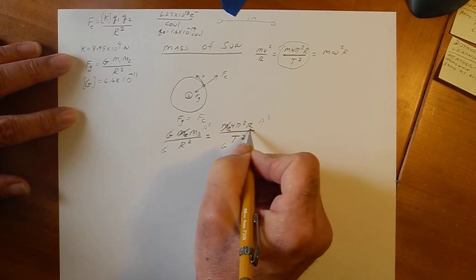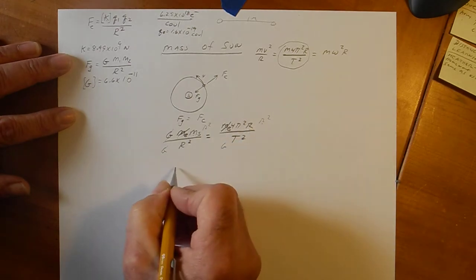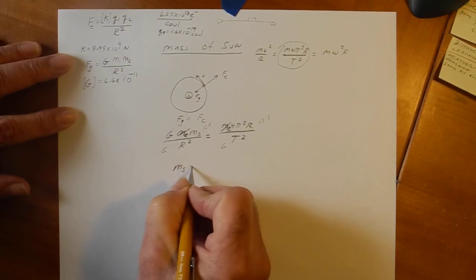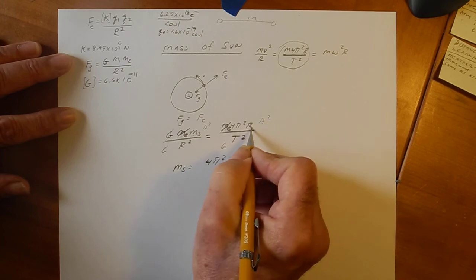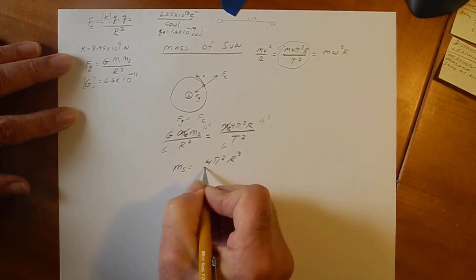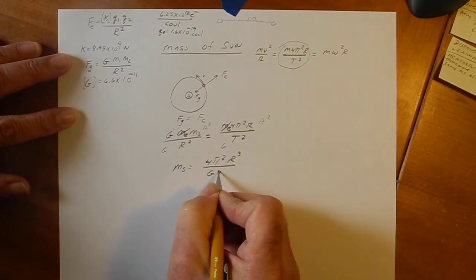So, we have an R squared and an R as an R cubed. Let's make this cleaner. So, mass of the sun is equal to 4 pi squared R squared times R is R cubed divided by G T squared.